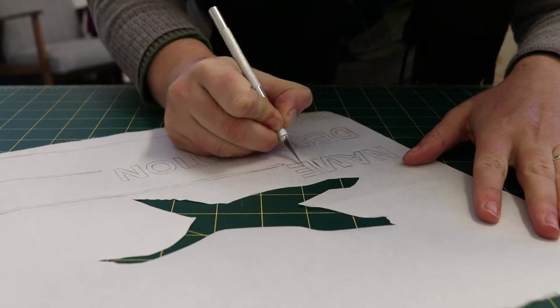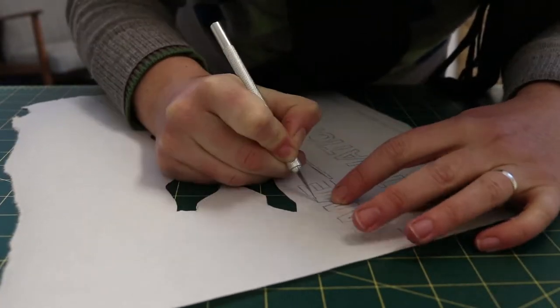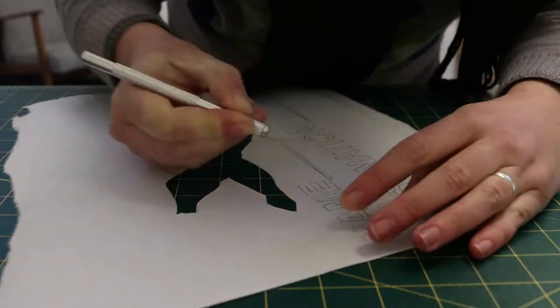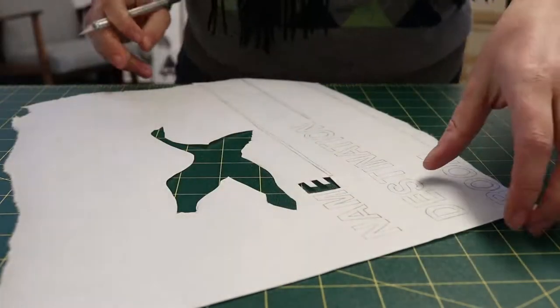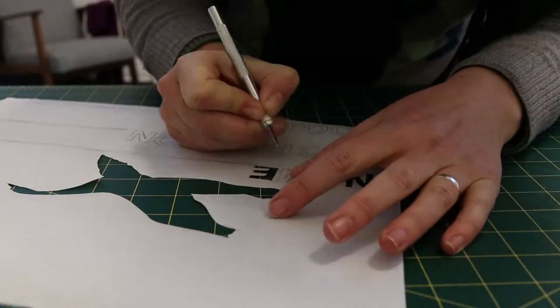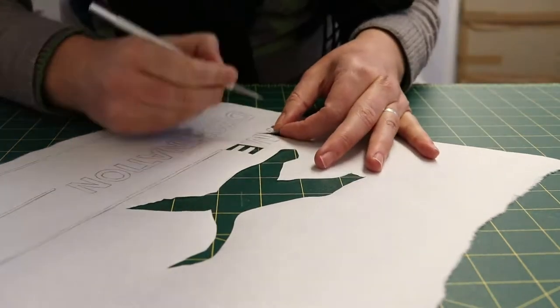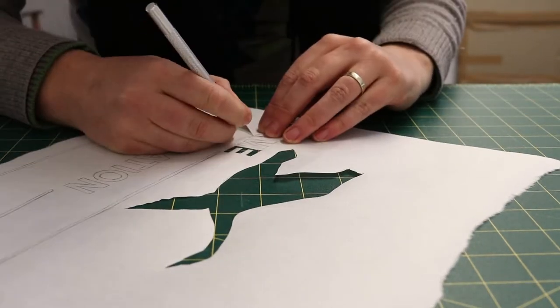When I was deciding on a charity to promote as part of this year's Project for Awesome, I thought about what Corita would be fighting for today if she was alive, and the answer was easy. She would be doing absolutely everything she could to help with the international refugee crisis. So today, while we're screen printing, we're going to learn a little bit about the UNHCR, which is the United Nations Refugee Agency.